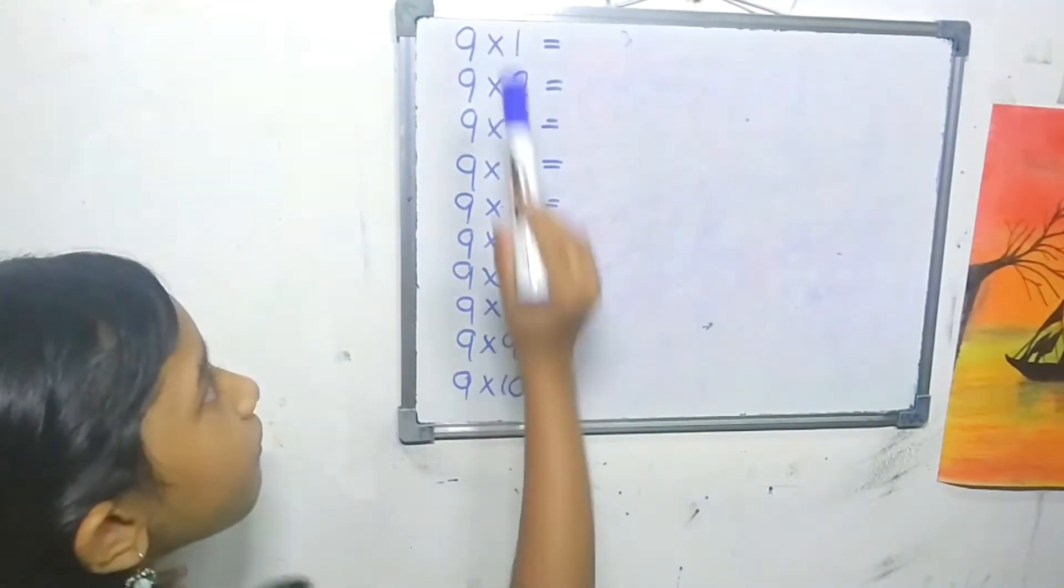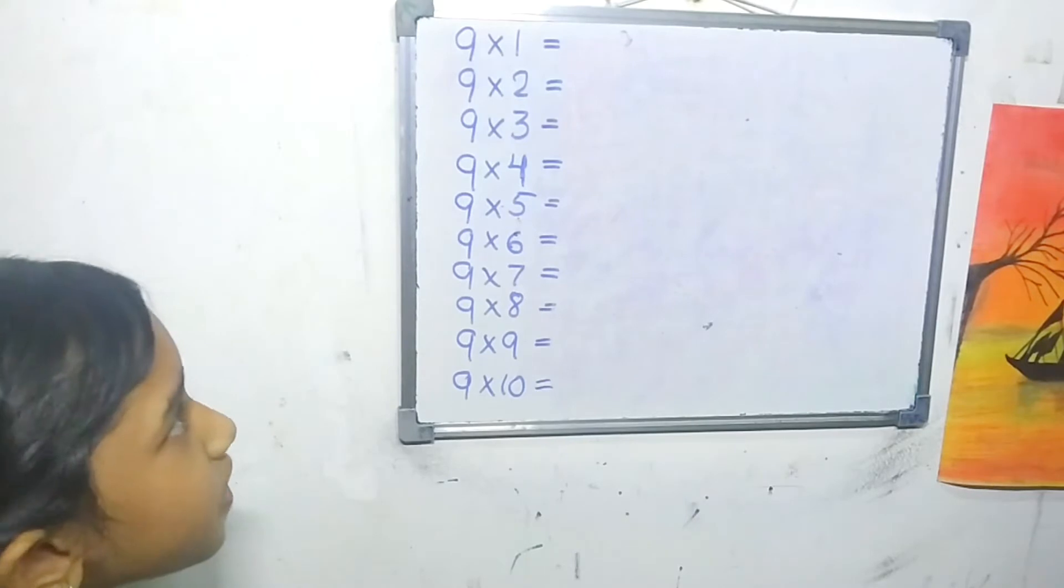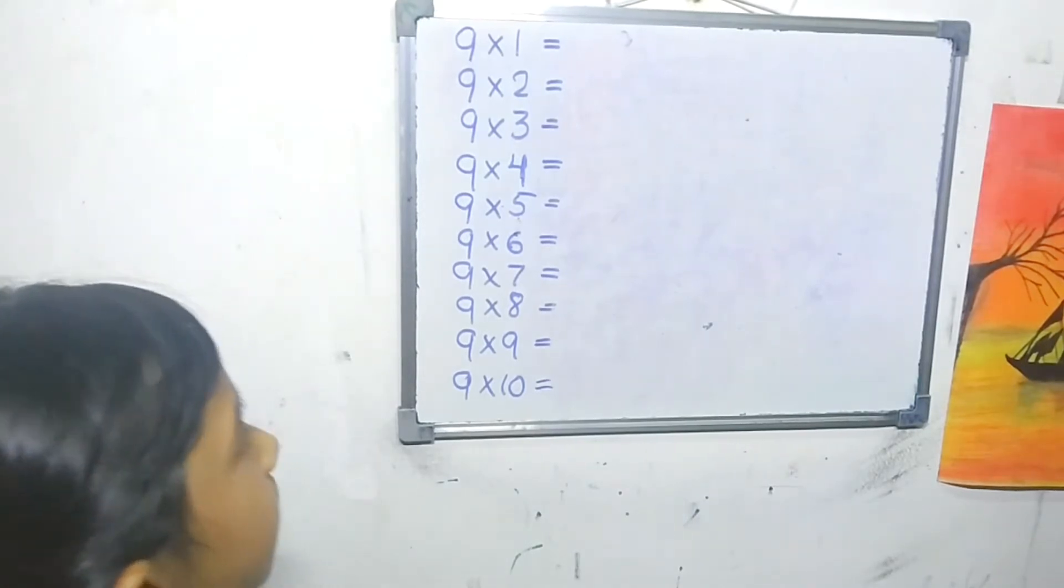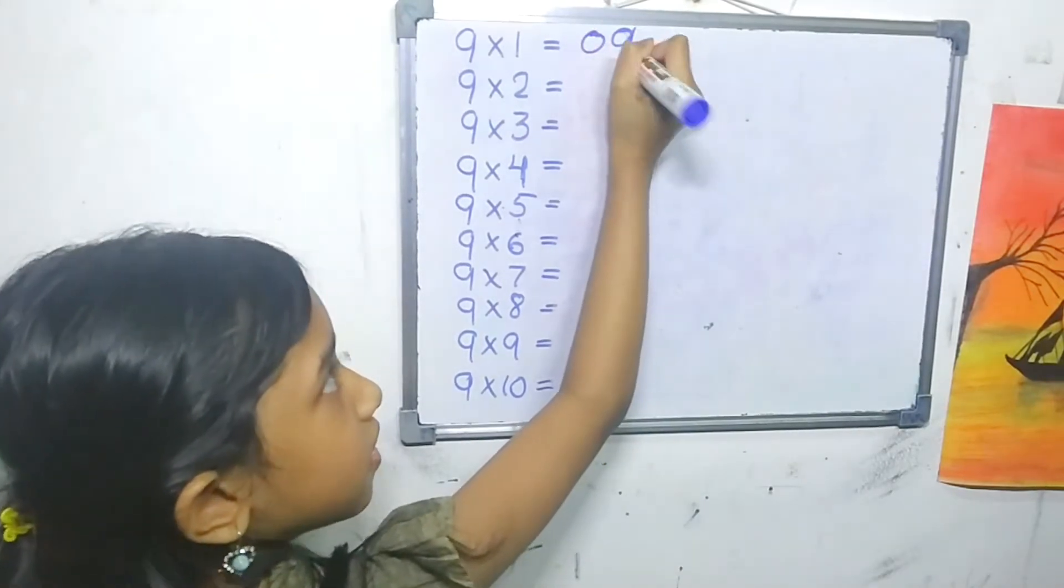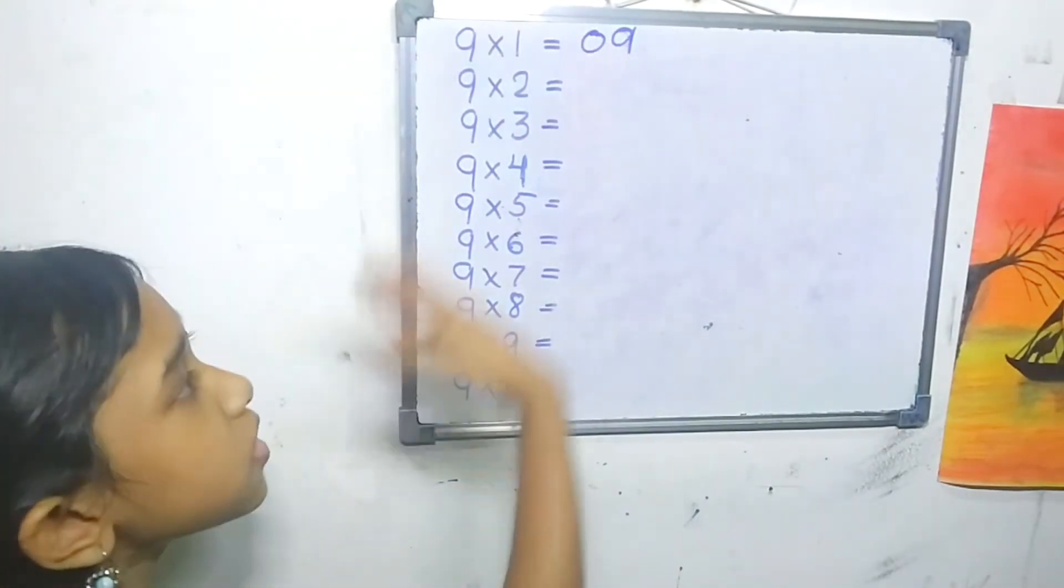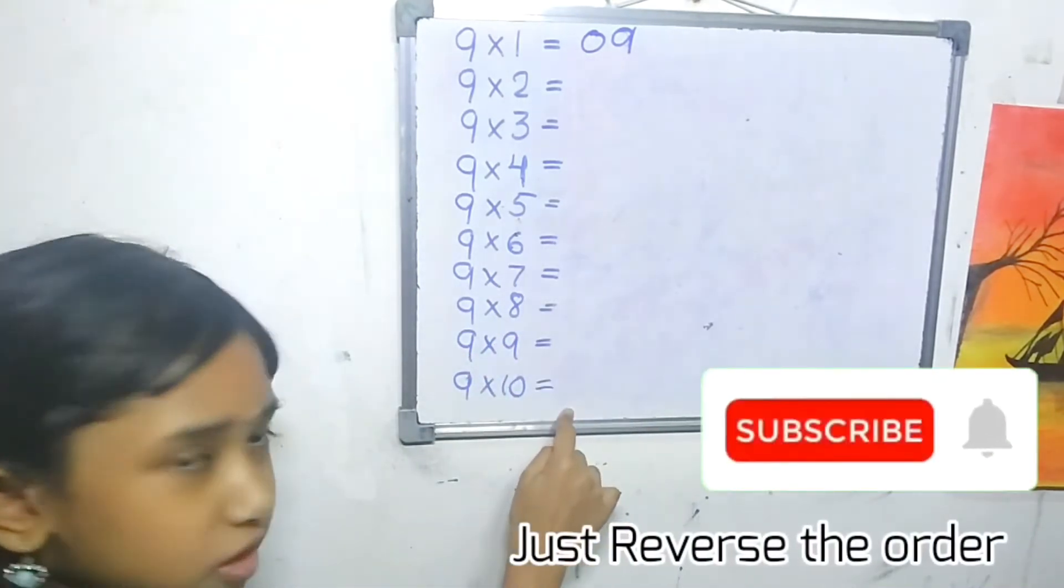First you should write 1 to 10, 9 times. So write down 9 once again: 9, right? Now just reverse it to the bottom side.